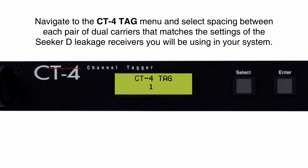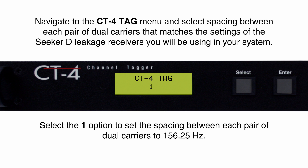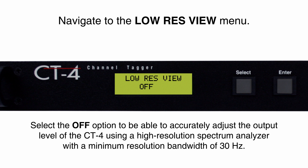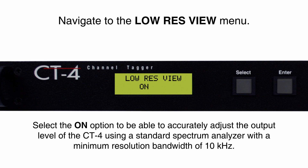The CT4 tag menu gives you the ability to select between two different tag settings. Remember that the tag setting selected here needs to match the tag setting programmed into the Seeker D meter. The low res view, short for low resolution view, refers to temporarily spreading the dual carriers to 25 kHz so that an analyzer with a resolution bandwidth of 10 kHz can accurately measure the output level of the injected carriers. In most cases, you will turn this feature on for the duration of the CT4 setup.